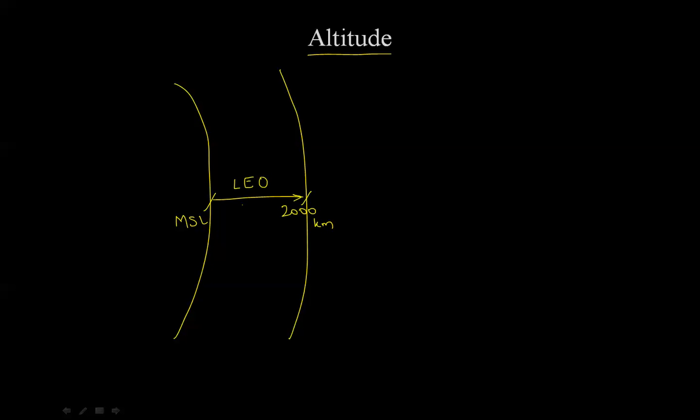The International Space Station is within this band at an altitude of roughly 340 kilometers. The Hubble Space Telescope is also within this band and orbits the Earth at roughly 500 or so kilometers above mean sea level.